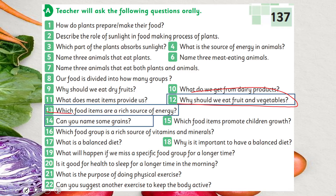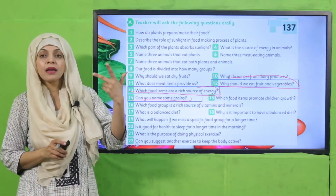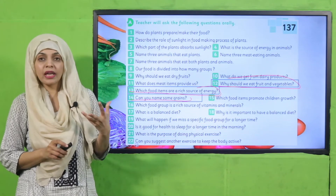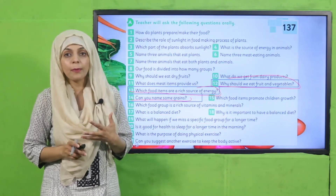Which food items are a rich source of energy? Grains — because they have carbohydrates in them. Can you name some grains? Wheat, barley, rice. These are some grains which are very rich in carbohydrates.